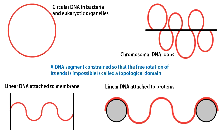A few examples of topological domains are shown here. Circular DNA is one example, which is typical of bacteria, mitochondria, chloroplasts, and many viruses — in this case there are no DNA ends at all, since both DNA strands are covalently closed. The chromosomal DNA of eukaryotes is linear overall, but consists of large DNA loops firmly attached to the nuclear matrix; these loops represent topological domains equivalent to circular DNA topologically. Similarly, DNA attached to the membrane and those attached to proteins behave as similar topological domains.